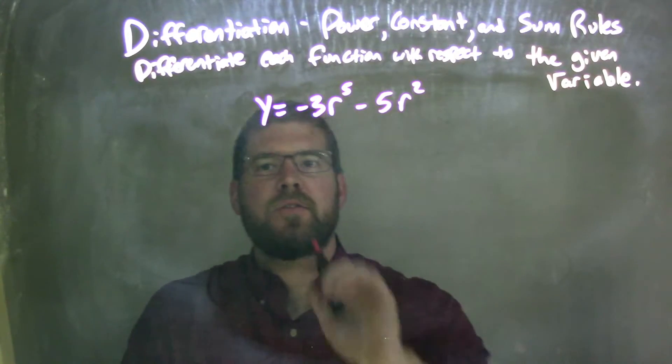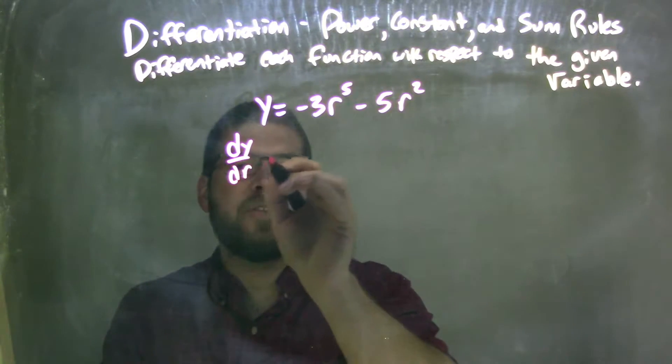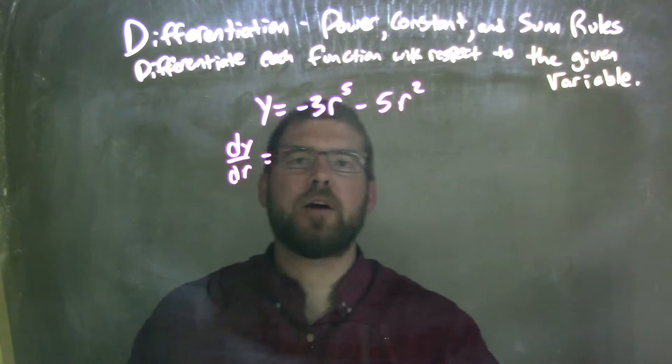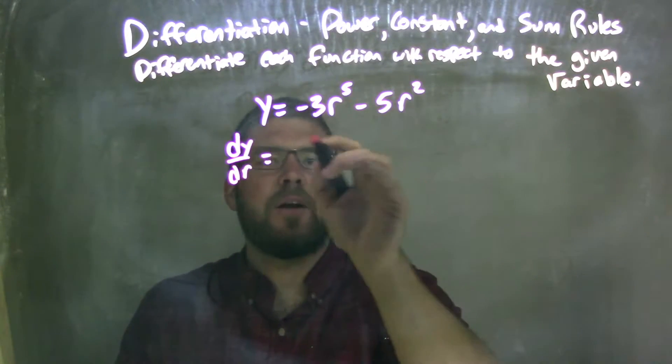So when I derive this, my dy over dr with respect to r, with respect to the r variable, I'm going to be using the power rule. So the power rule still applies, just like any other variable.